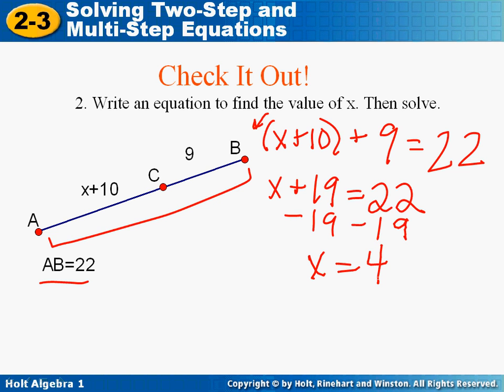Now if you're asked to find both parts, the two parts, x is 4. Now the first part, if you plug in a 4, the length of AC is 14, and the length of BC would be 9. So really watch what they're asking for.